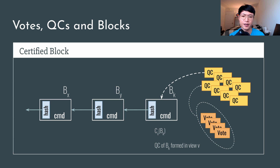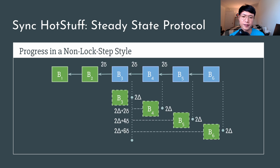A certified block is a block that has got F plus 1 votes collected locally into a QC. For example, in this diagram, block BK gets majority votes, and thus there is a QC kept locally by a replica to certify BK. Unlike HotStuff, in Sync HotStuff, QCs are not contained in the blocks, but stored in a separate pool which updates itself by trying to construct a new QC once more votes are received. Now it is time for our steady state protocol, the common case. Normally, when the leader is honest and the system keeps making progress, new blocks are repeatedly proposed by the leader. In the leader's proposal, it contains the QC of some previous block and the content of a new block. This means in steady state, the leader needs to wait for the votes on the previously proposed block before it generates the next one, and thus it takes exactly one round trip time between the generation of two adjacent blocks.